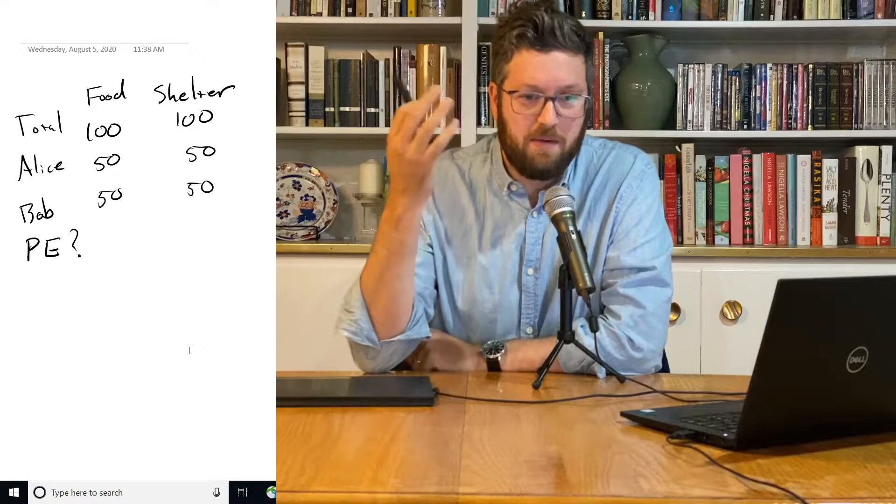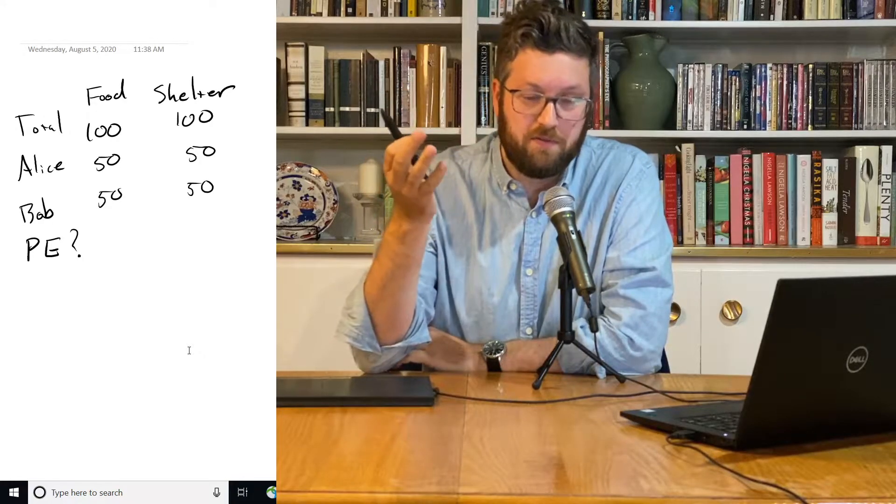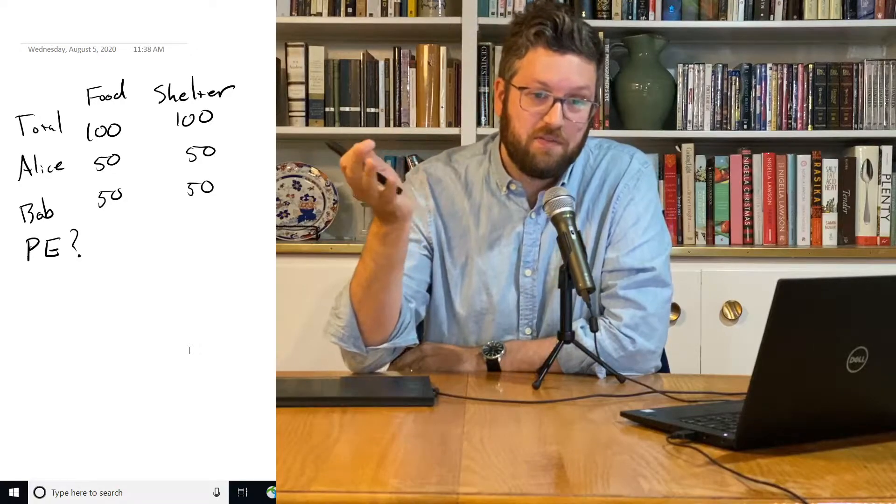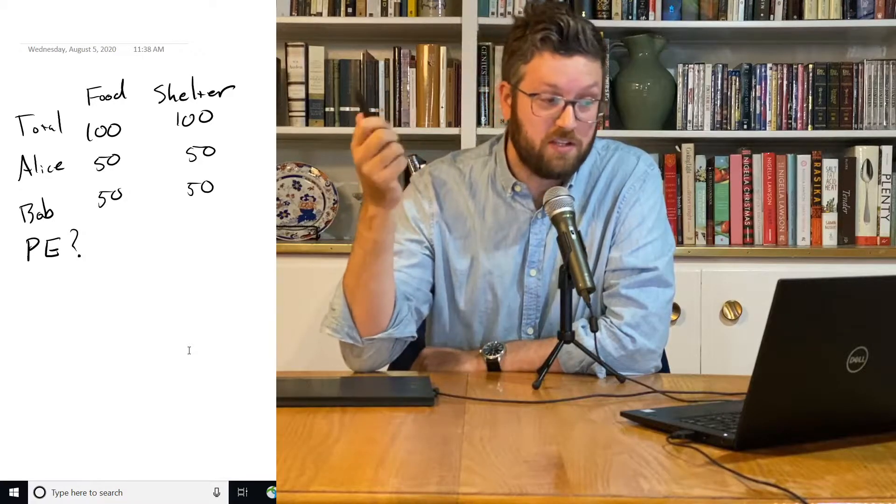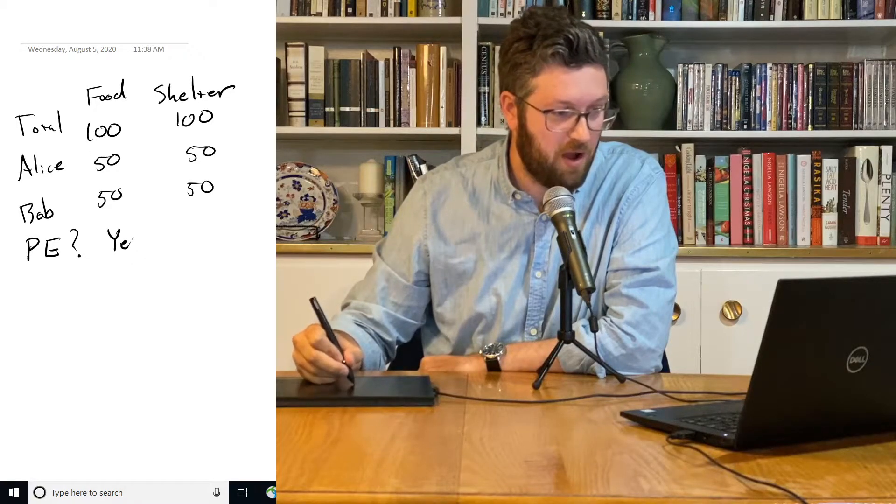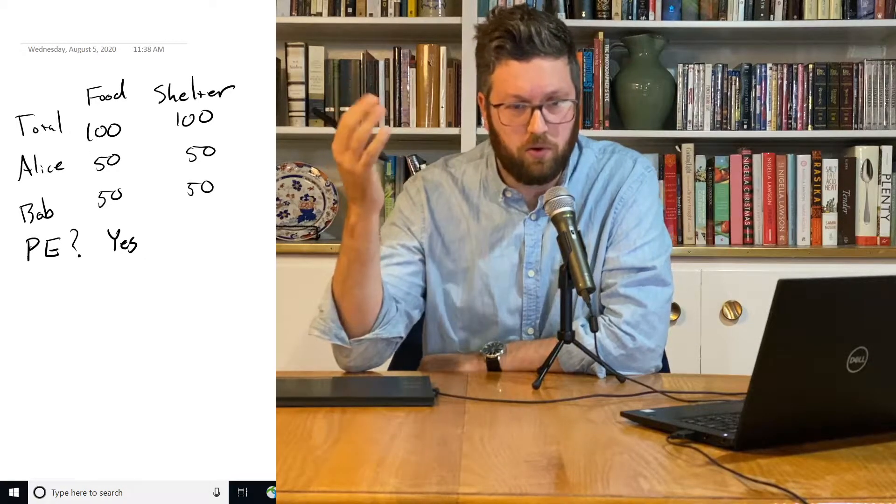And so we can't make Alice or Bob better off in terms of food without making the opposite one worse off. Similarly with shelter. So is this Pareto efficient? Yes. Because we can't make any of them better off unless we make the other one worse off.